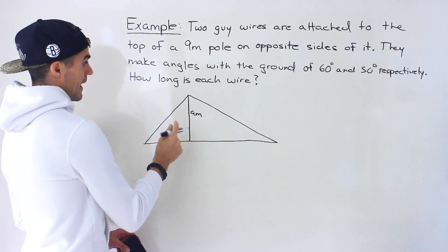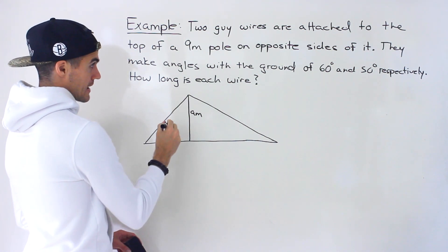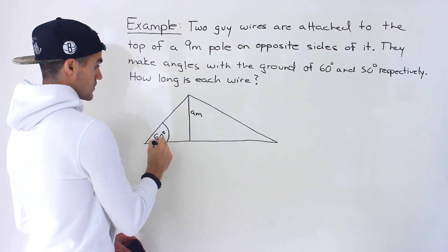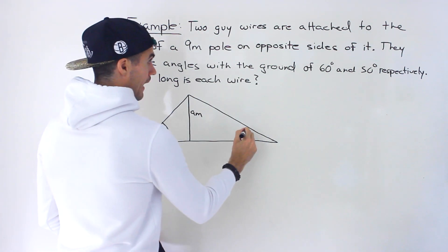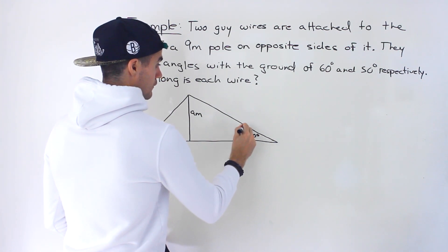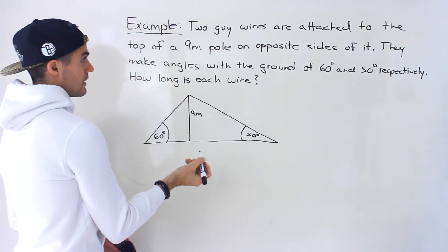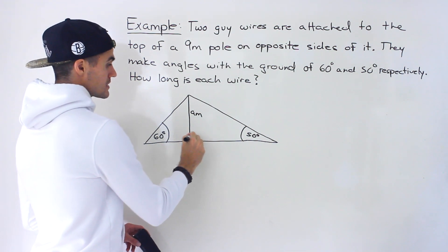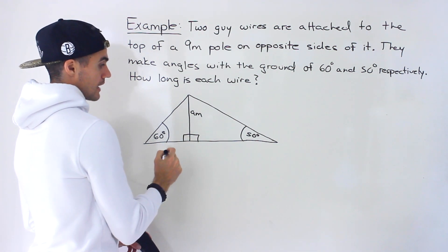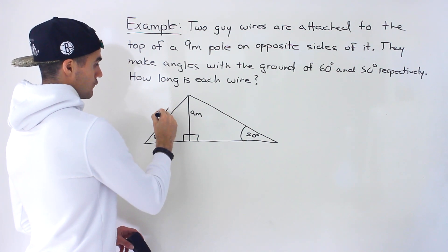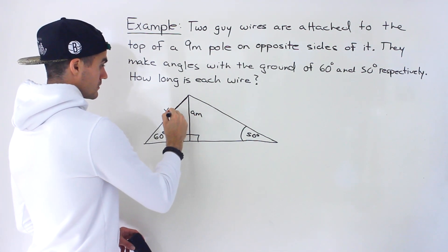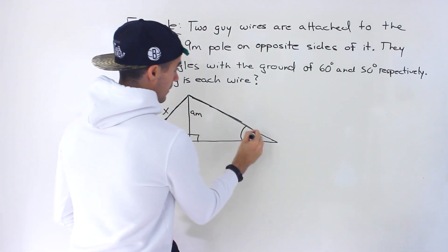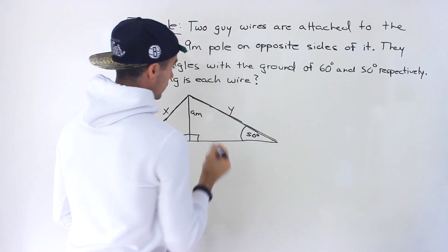And we're told that one of the guy wires has an angle relative to the ground of 60 degrees. We'll say that's this one. And then the other one has an angle relative to the ground of 50 degrees, which would be this one. And they're asking how long is each wire? Well, notice that both of these make a 90 degree angle right here. And they're asking for this guy wire length. So we could label that as X. And then they're asking for this guy wire length, which we could label as Y.